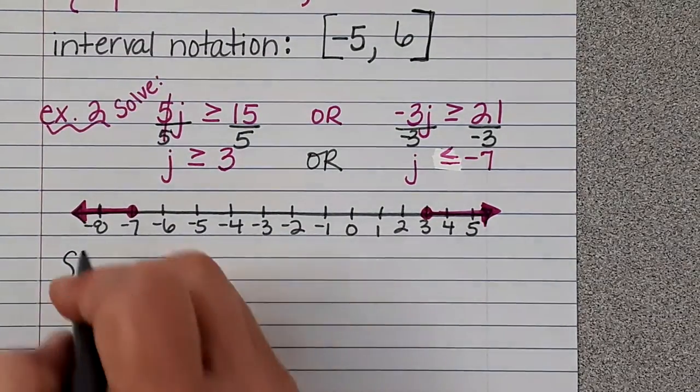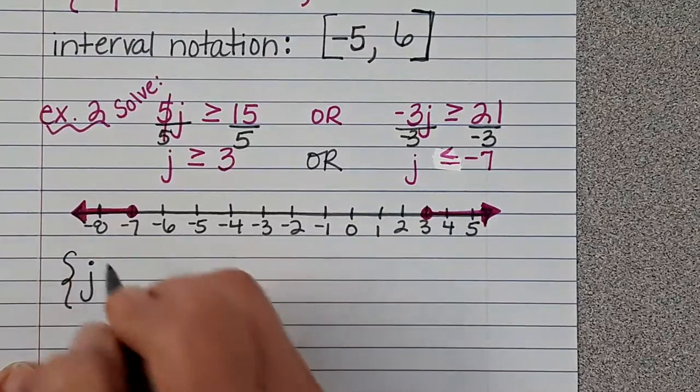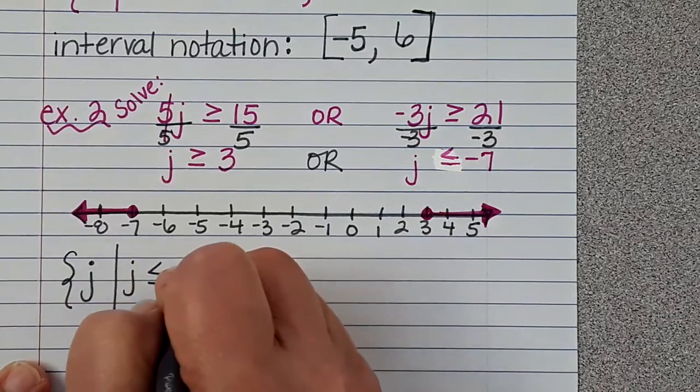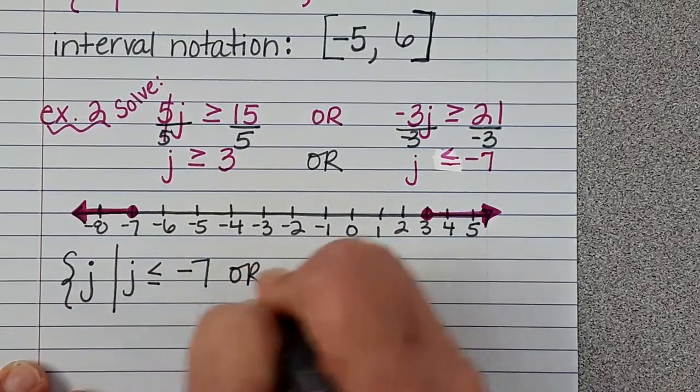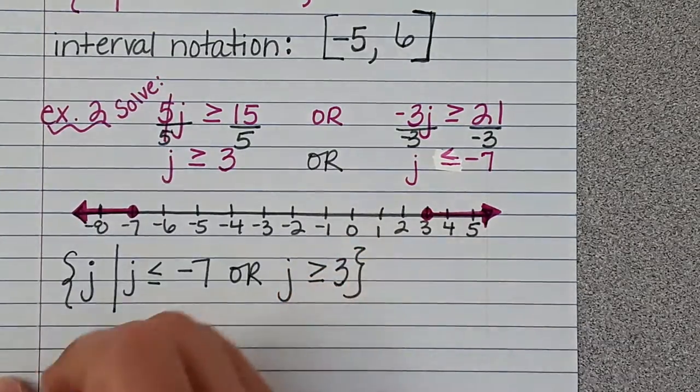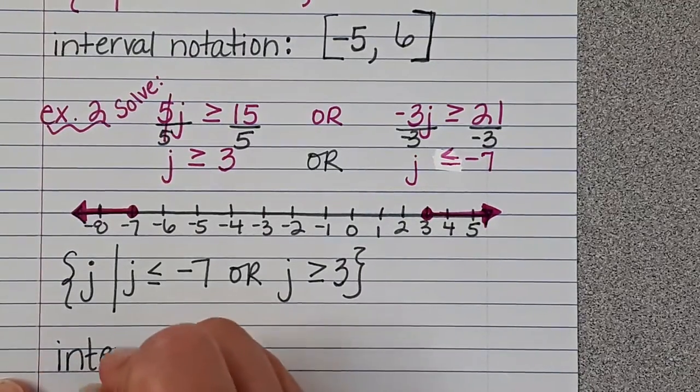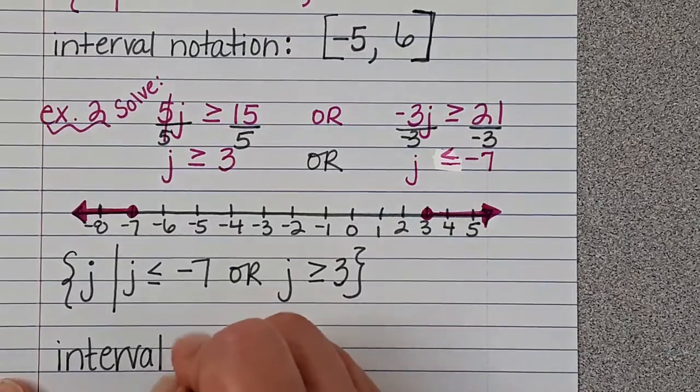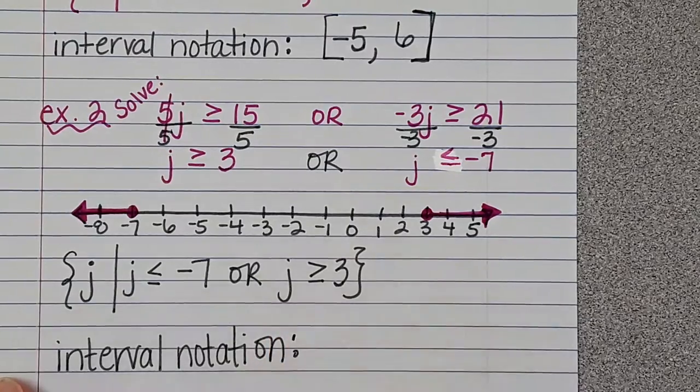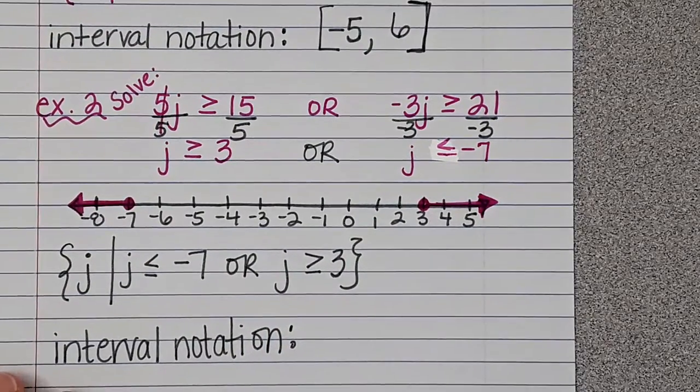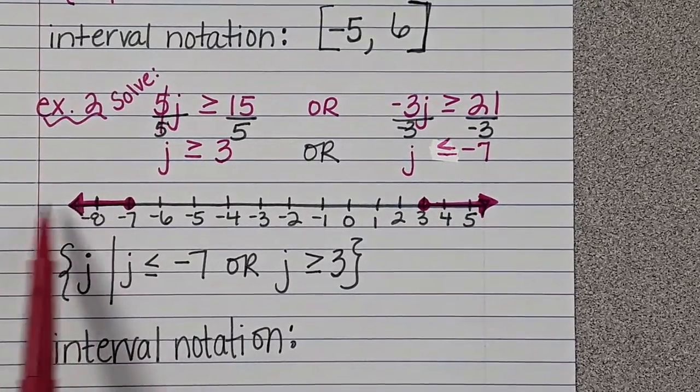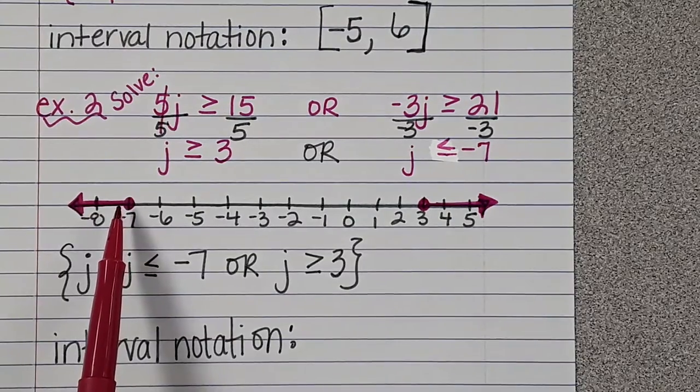We're going to do set builder notation. Okay, where does this end? We know it starts at negative seven, right? Where does it end?